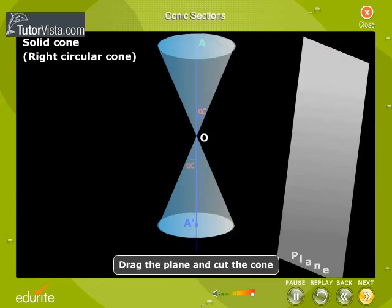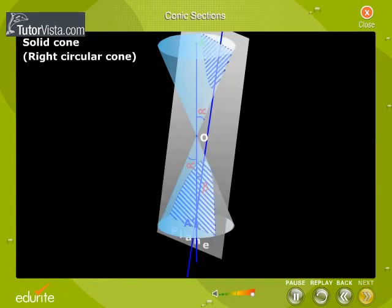Drag the plane and cut the cone. Click on the button. The sectional view shows a hyperbola whose axis is inclined at an angle beta to the axis of the cone.